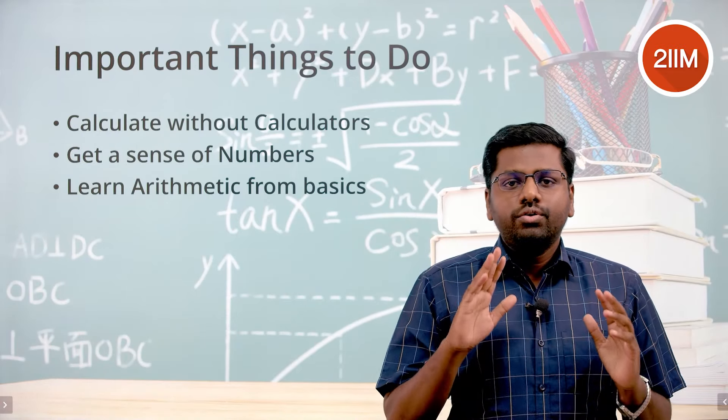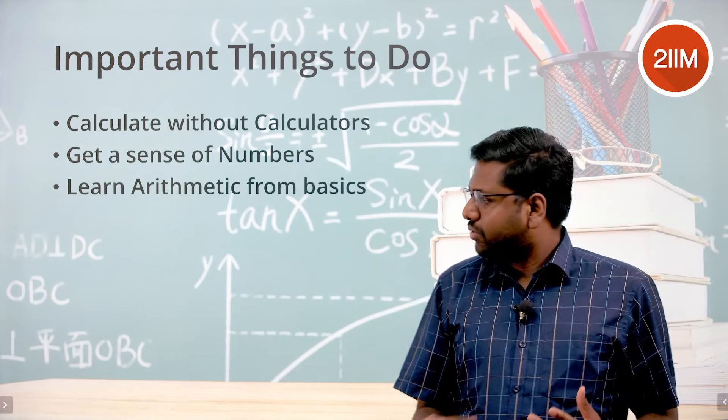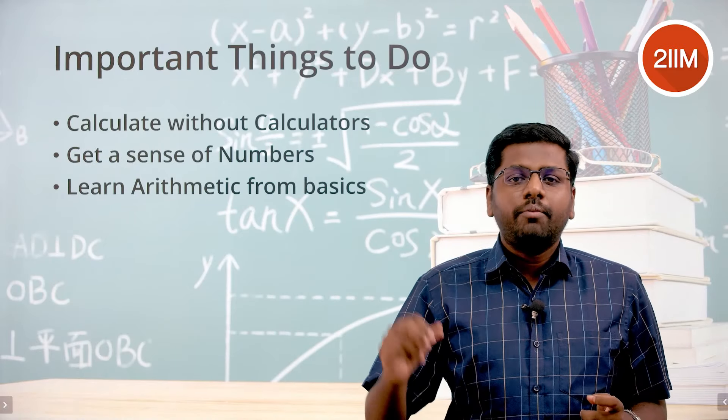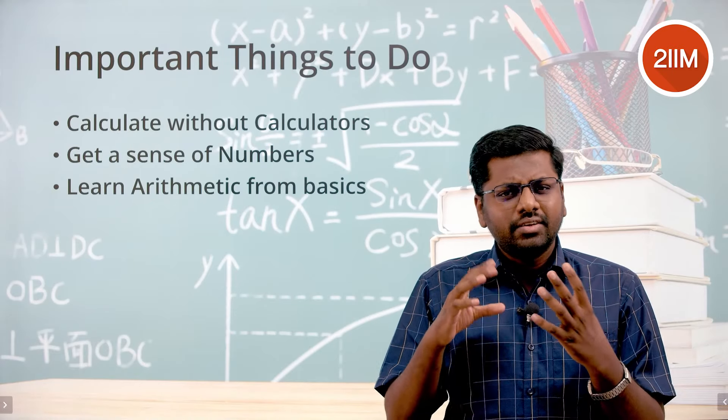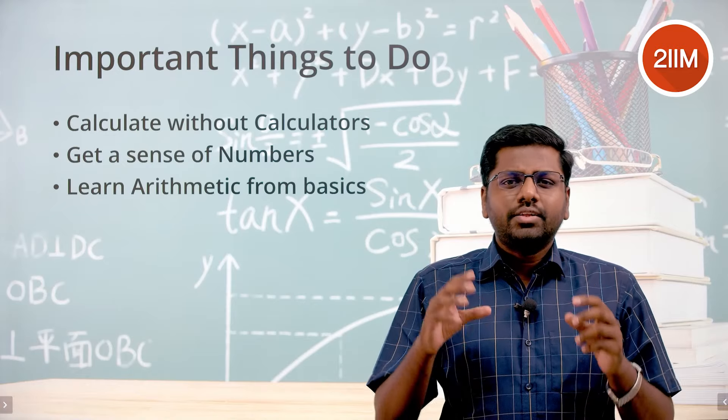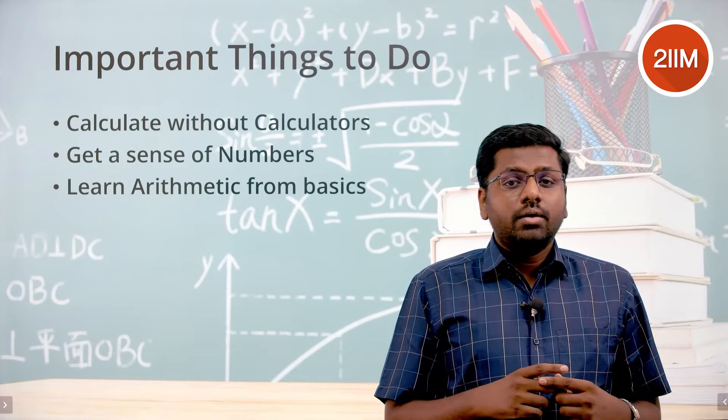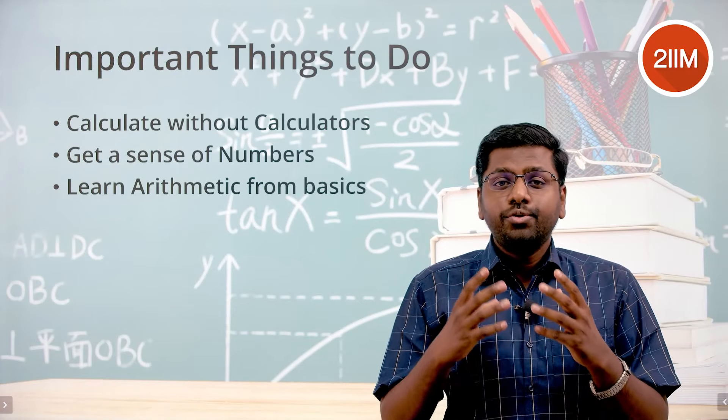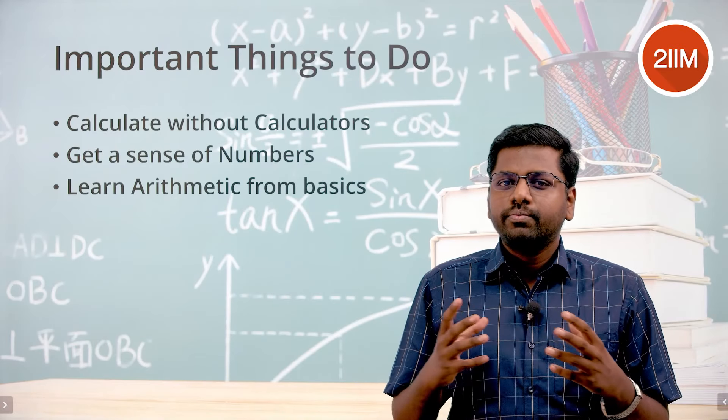The second thing is you will get a sense of numbers, which relates to the second point. When you solve with pen and paper, whenever you see 1/6, you know there's a 16.66 sitting inside that. Whenever you see 1/8, there's a 12 point something sitting inside there. 1/15, 1/16, 3/7 is 42 point something.